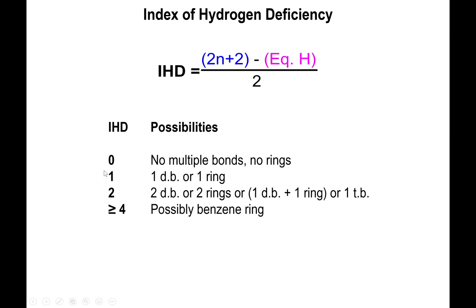When you get an IHD equal to or greater than 4, it is very possible that your molecule contains a benzene ring. If greater than 4, benzene is present plus something else — perhaps a carbonyl or an additional ring. Benzene accounts for IHD = 4 because it is a ring (IHD = 1) with three double bonds (IHD = 3). It's important to keep in mind this is a possibility, not a guarantee, but it is a strong probability.